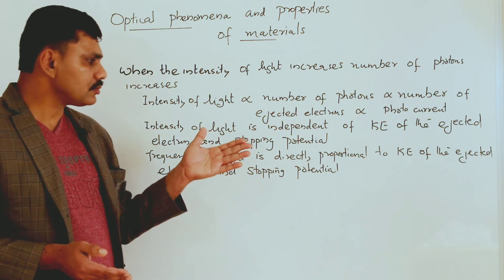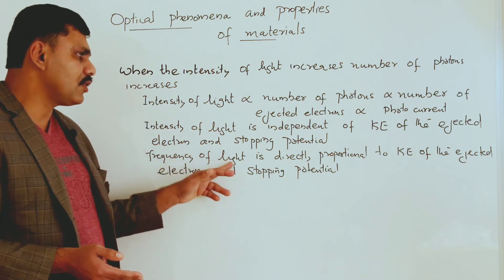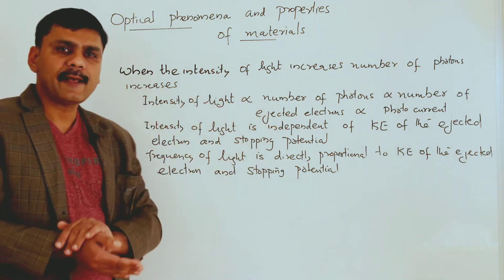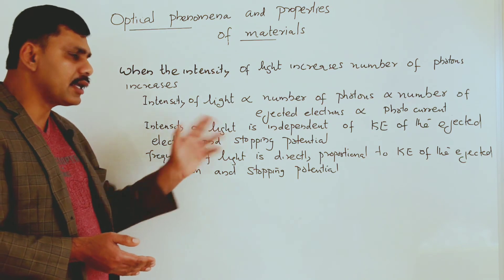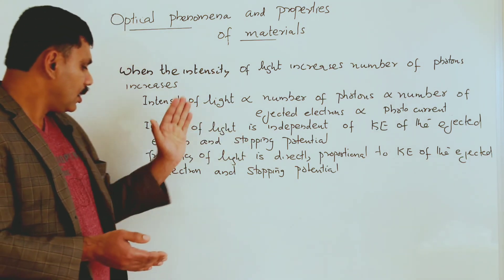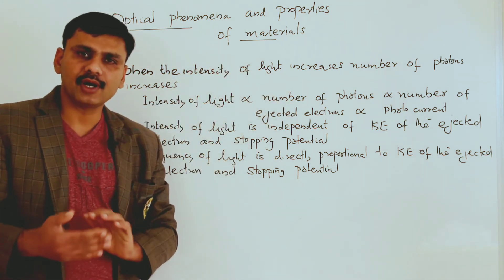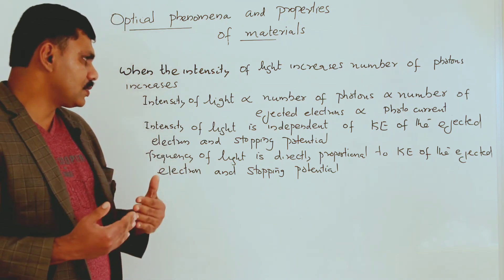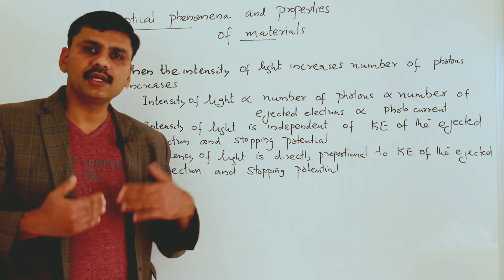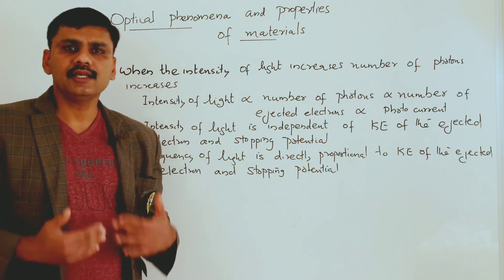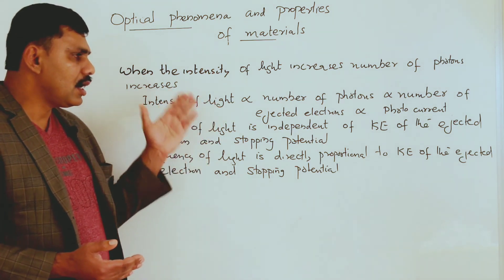These are the important conclusions from the previous experiments. Intensity of light has no effect on kinetic energy of the electron and stopping potential. Frequency of light is directly proportional to kinetic energy of the electron and stopping potential. Intensity of light can increase the photocurrent — more photons means more ejected electrons, which increases the current in the circuit. These are the relationships between intensity and frequency with other variables.